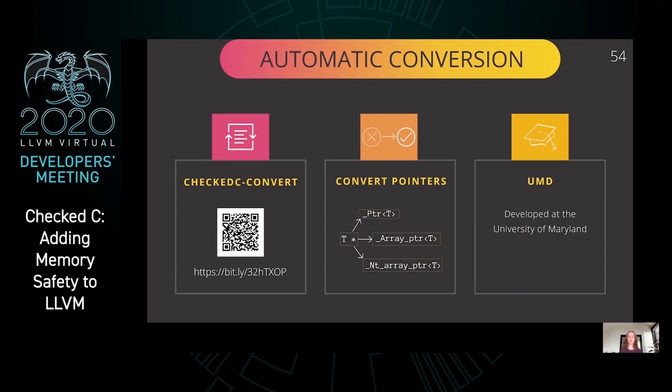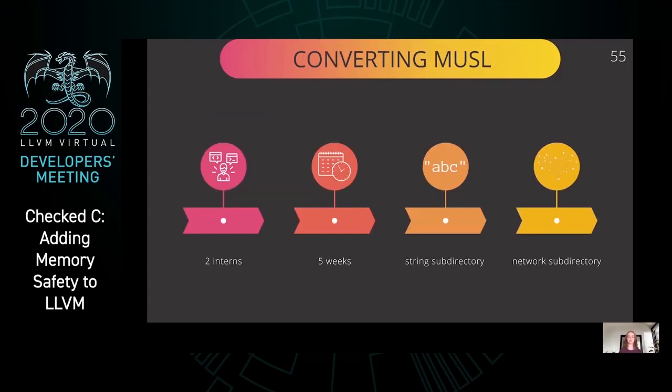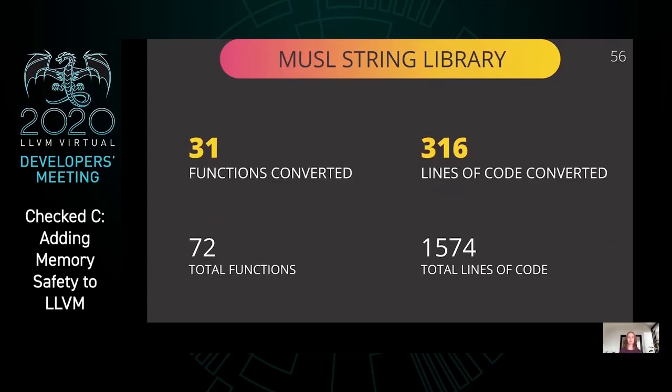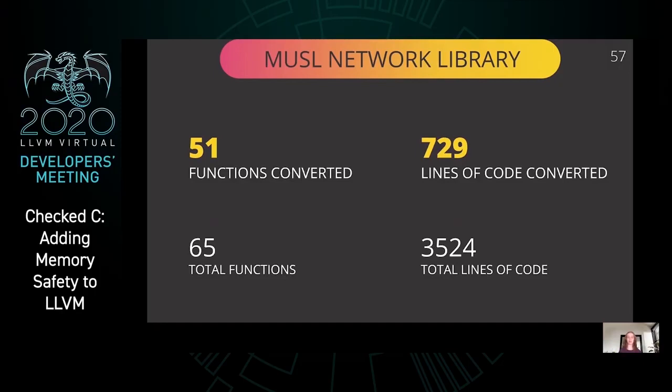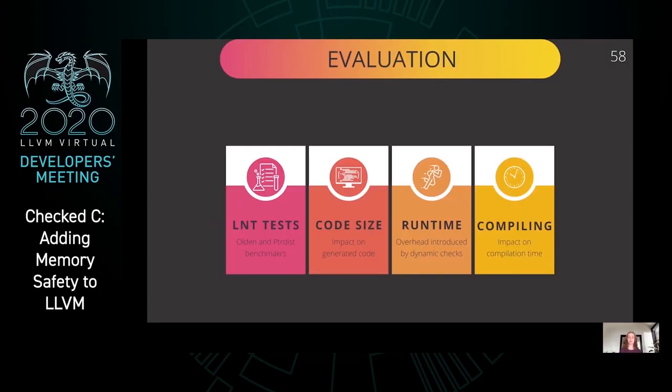The Checked C convert tool helps convert C programs to Checked C. It can automatically convert unchecked pointers to checked singleton, array, and null-terminated array pointers. This summer, the Checked C team had two interns work on testing Checked C on a large systems code base. The interns spent five weeks converting portions of the string and network subdirectories of the musl library to Checked C. In the musl string library, 31 functions and 316 lines of code were converted. In the musl network library, 51 functions and 729 lines of code were converted.